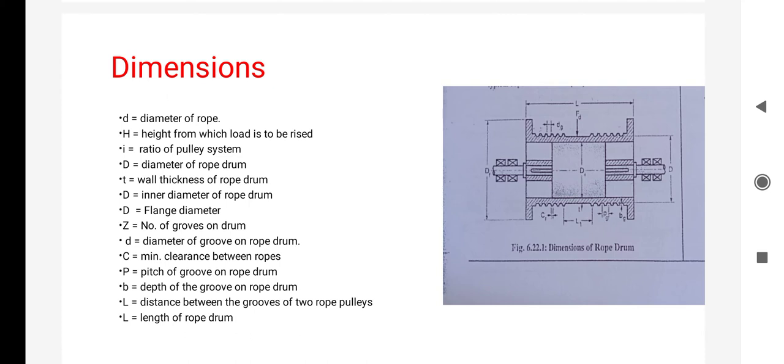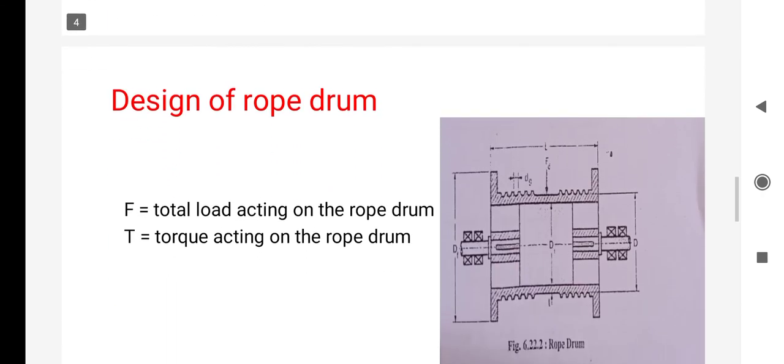P is the depth of groove on the rope drum, L is the distance between the grooves of two rope pulls, and l is the length of rope groove. These are the dimension factors. In the next slide, we are going to see the design of rope drum.